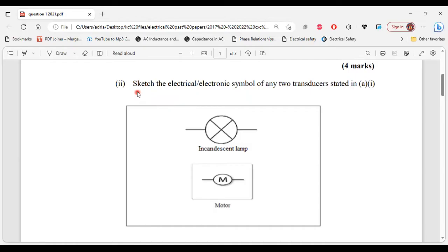It says sketch the electrical/electronic symbol of any two transducers stated in part 1 of A. Here I have the symbol for the incandescent lamp, and also the symbol for the motor as well. These are the two symbols. That's it for part 2 of A.